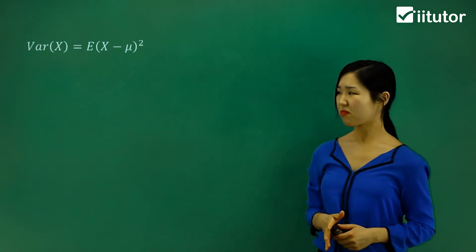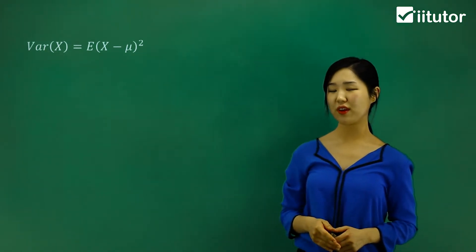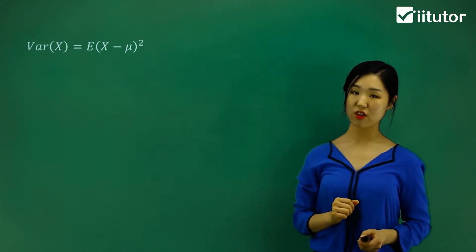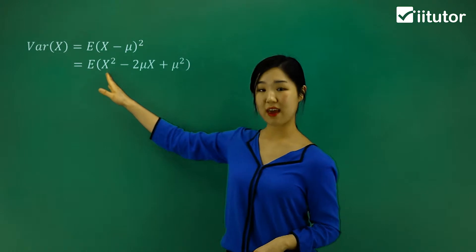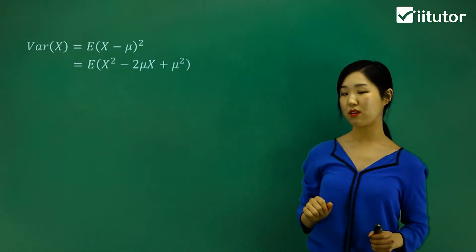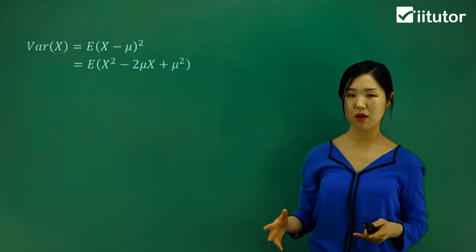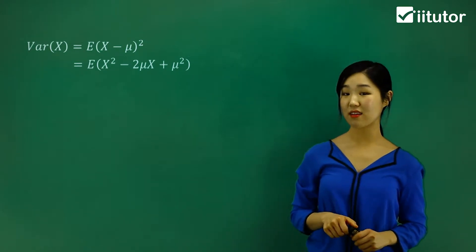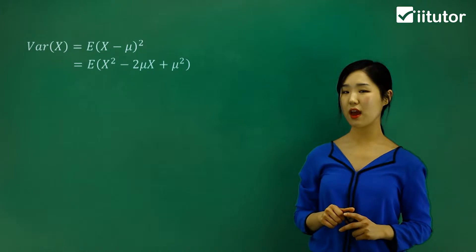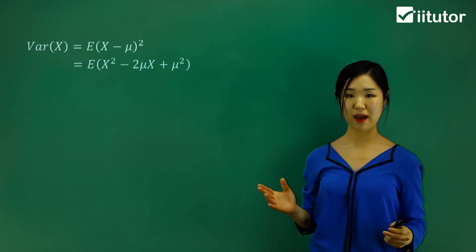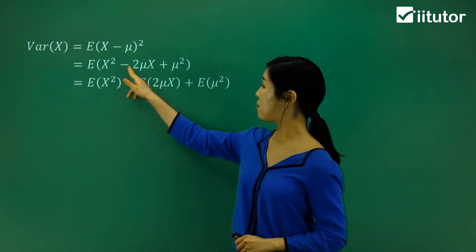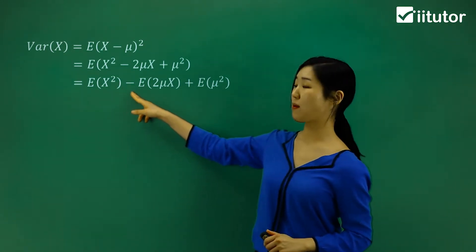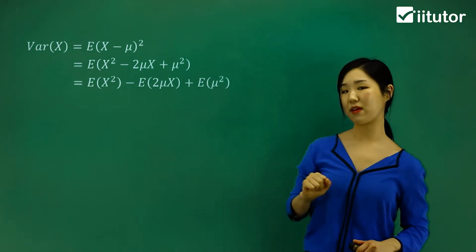That's going to be a bit tricky to find, so I'm going to expand it out for you. X minus mu squared is a quadratic, so I'm going to use quadratic expansion: (X minus mu) squared equals X squared minus 2 mu X plus mu squared. Using our expected value theorem, I can separate them out — I can have the expected value of X squared, minus the expected value of 2 mu X, plus the expected value of mu squared.